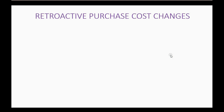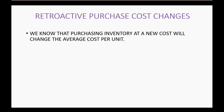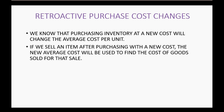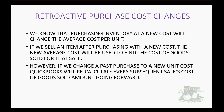Retroactive purchase cost changes have an effect on your cost of goods sold and your merchandise inventory, as well as your profit, and you need to understand the effect. We know that purchasing inventory at a new cost will change the average cost per unit. If we sell an item after purchasing with a new cost, the new average cost will be used to find the cost of goods sold for the sale or any future sales. However, if we change a past purchase to a new unit cost, QuickBooks will recalculate every subsequent sale's cost of goods sold amount from that moment going forward.